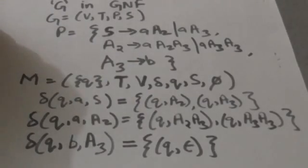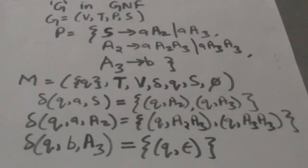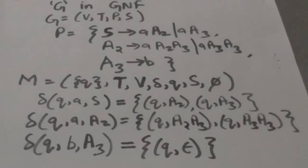For the production A2 derives a·A3A3, we will add the transition delta(Q, a, A2) = (Q, A3A3) in pushdown automata M. And for the production A3 derives b, we will add the transition delta(Q, b, A3) = (Q, empty) in pushdown automata M. In this way we can construct a pushdown automata for a context-free grammar. Thank you very much.